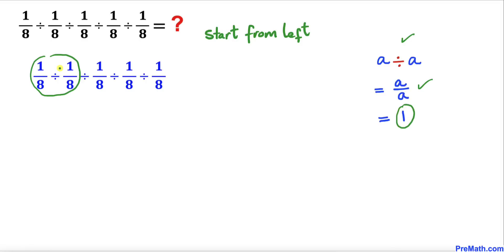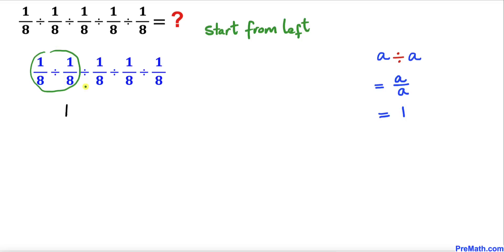So therefore this part is going to be equal to 1 if we pretend that this is an A divided by another A. So therefore the value of this part has turned out to be simply 1.